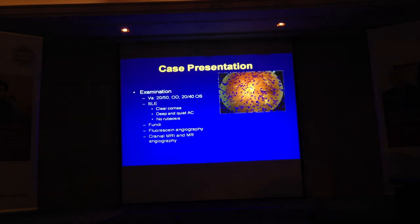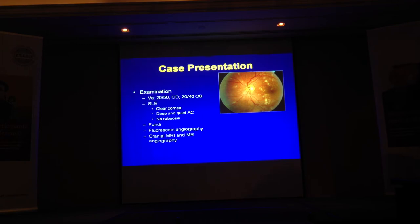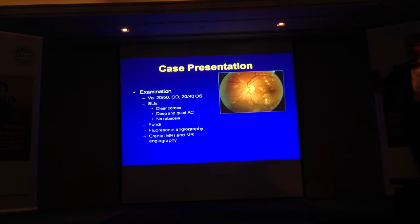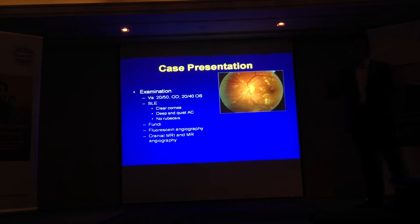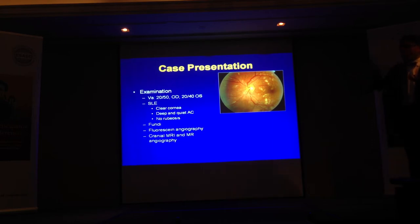On examination, vision is 20/50 and 20/40. The anterior segment is clear with no reaction. Looking at the fundus — someone would like to discuss what they see? Are you certain this is exudate? How do you differentiate? What else could these white spots be? Cotton wool spots. What's the difference between a cotton wool spot and exudate? Cotton wool spots are infarcts of the nerve fiber layer — much more superficial. Exudate is usually deeper. These are actually cotton wool spots.